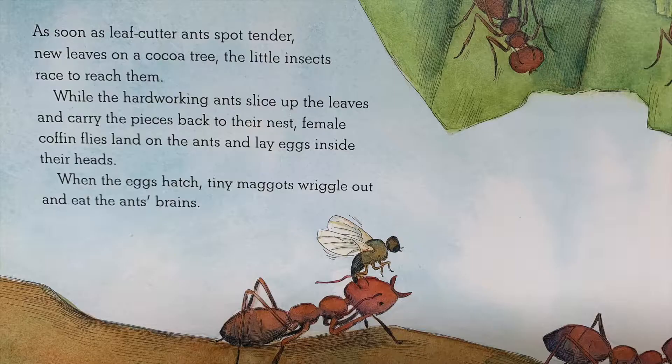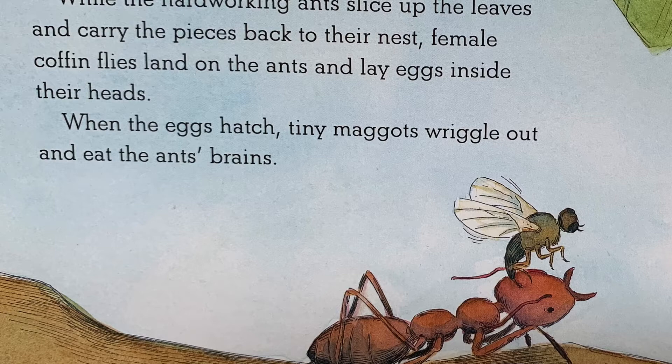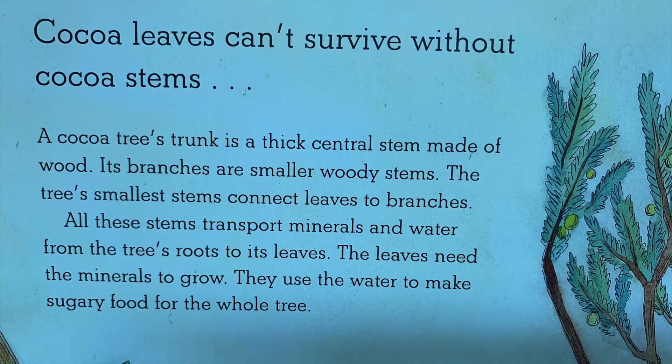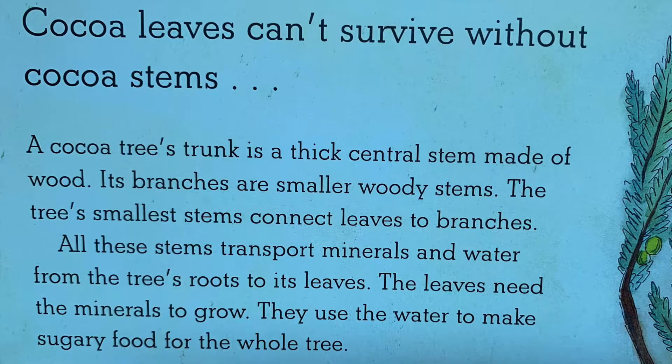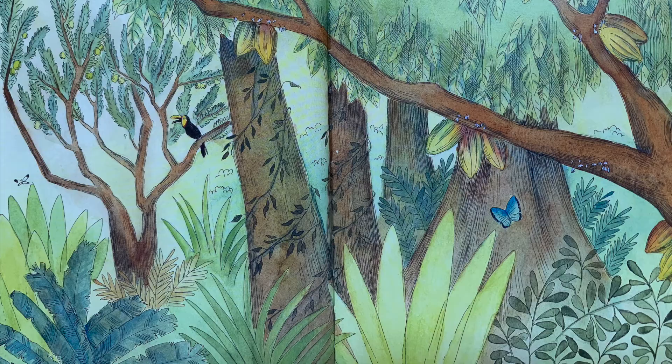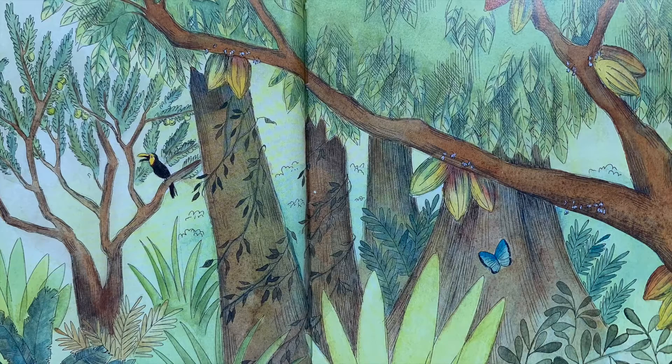Cocoa leaves can't survive without cocoa stems. A cocoa tree's trunk is a thick central stem made of wood. Its branches are smaller, woody stems. The tree's smallest stems connect leaves to branches. All these stems transport minerals and water from the tree's roots to its leaves. The leaves need minerals to grow, and they use the water to make sugary food for the whole tree.